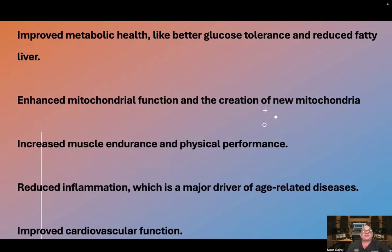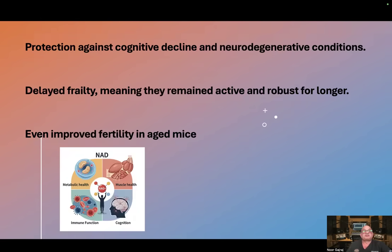Let's take a look at these health span parameters. Improved metabolic health, like better glucose tolerance and reduced fatty liver. Enhanced mitochondrial function and the creation of new mitochondria. Increased muscle endurance and physical performance. Reduced inflammation, which is a major driver of age-related diseases. Improved cardiovascular function. Protection against cognitive decline and neurodegenerative conditions. Delayed frailty, meaning mice remain active and robust for longer. Even improved fertility in aged mice.